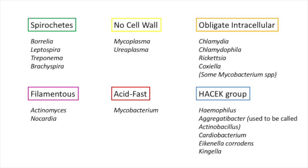The filamentous bacteria include Actinomyces and Nocardia. The purely acid-fast bacteria include Mycobacterium. The HACEK group includes Haemophilus, Aggregatibacter (formerly called Actinobacillus), Cardiobacterium, Eikenella corrodens — a particular species within the Eikenella genus — and Kingella. These bacteria are oral normal flora that can cause endocarditis if they manage to get into the blood and reach the heart valves.